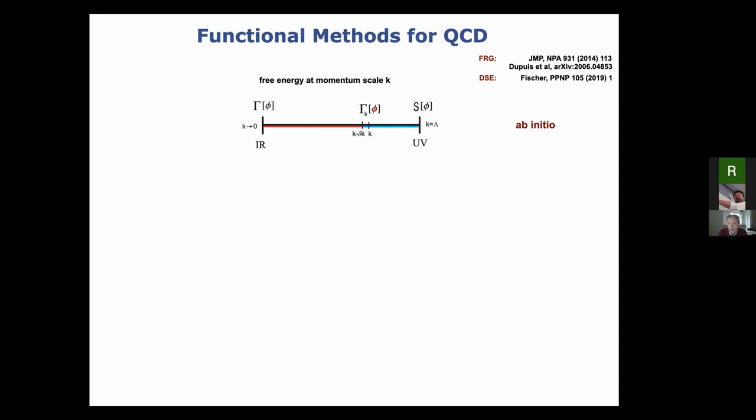First, we suppress all infrared modes up to a very large scale. In QCD, we have a good grip on this object by perturbation theory. Then we successively lower this momentum scale and integrate out momentum shells one by one. So it's a Wilsonian RG setting we are talking about here.